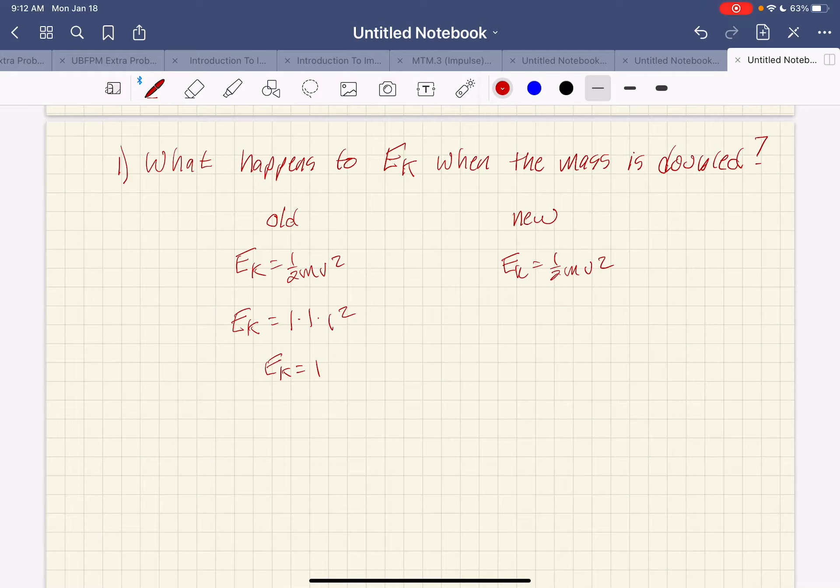In my new, my kinetic energy, one half didn't change, so I keep it at 1. My mass changed, it doubled, so now it's 2. My velocity didn't change, so that's 1 squared. So now, my kinetic energy is 2 times the amount that it was before.